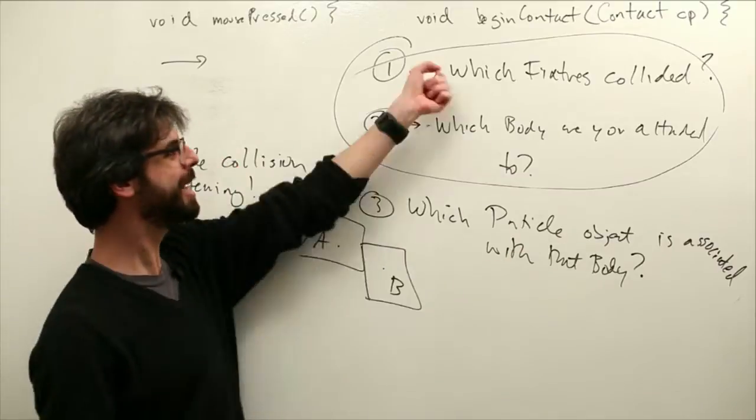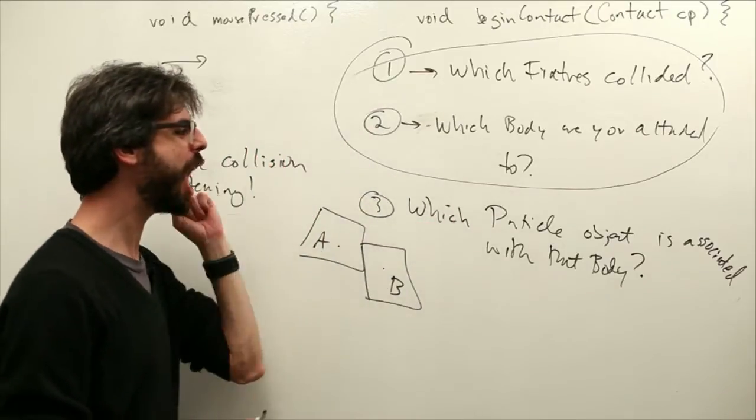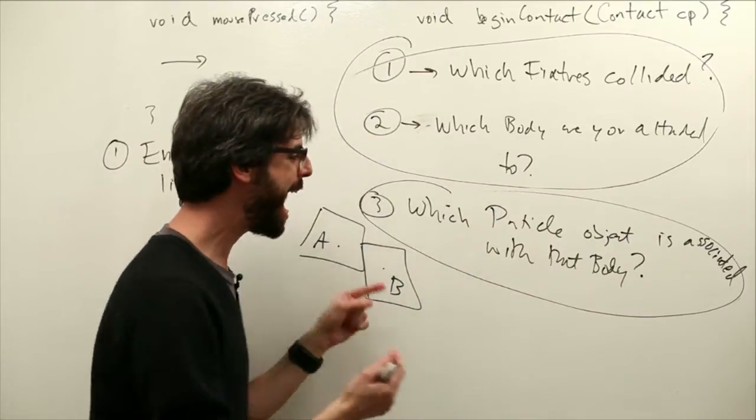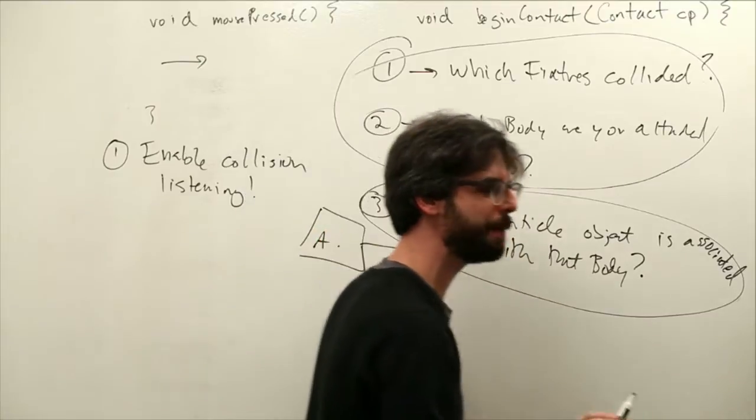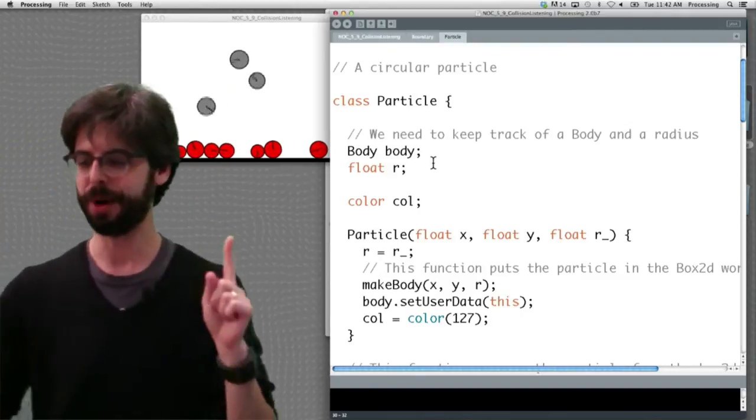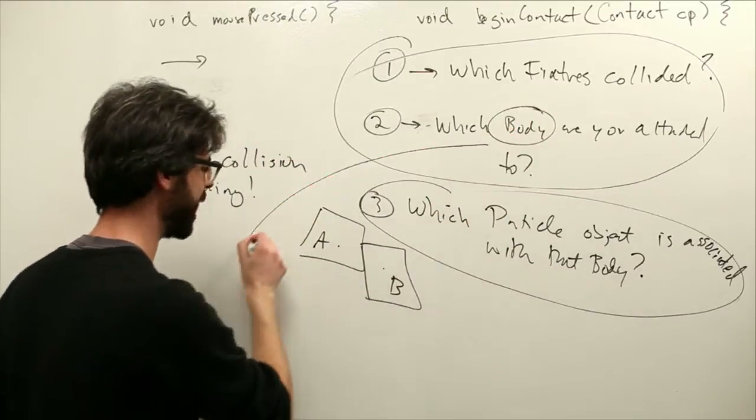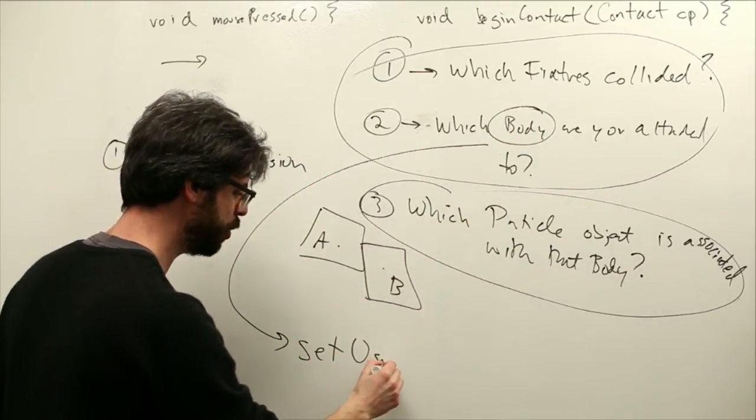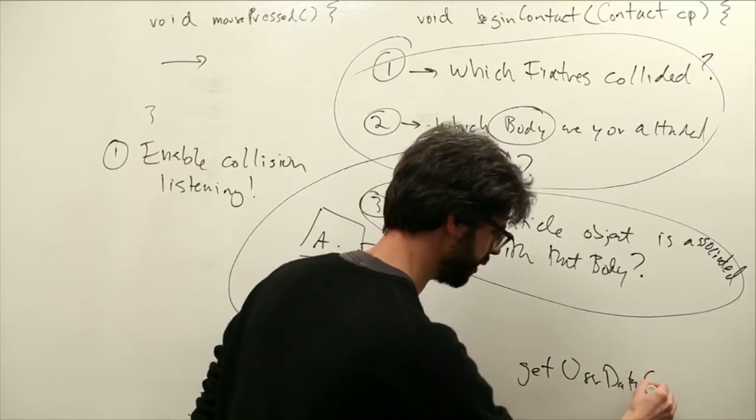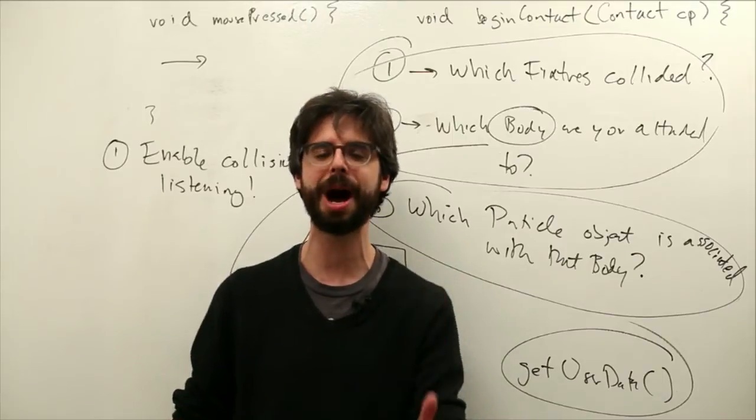Box2D says these two fixtures collided. The fixtures say these two bodies are the ones that we're attached to. It's up to us to now figure out through some mechanism, the particle class is our thing. Box2D doesn't know about it. How do we then pull up which particle is associated with that body? Because remember, each particle has a body variable attached to it. Now, there's a little magic in Box2D that allows us to do this. It's something in the body class called setUserData and also getUserData. These are key functions. Set user data, get user data. They're part of the body class.